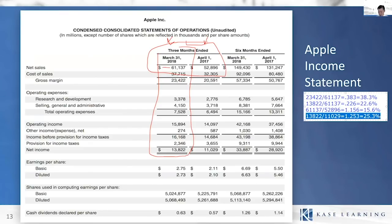And the last number — net income growth rate — it's the same math, current period divided by prior period. If you do that division, it's approximately 25% year-over-year growth — 25.3%. So we've done some super simple calculations that take no time at all.